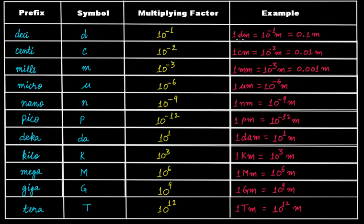For example, 1 decimeter is equal to 10 raised to the power of minus 1 meter — that's the multiplying factor for deci — so 1 decimeter equals 0.1 meter. Similarly, for centimeter, the multiplying factor is 10 to the power of minus 2, so 1 centimeter equals 0.01 meter. For millimeter, it's 10 to the power of minus 3 meter. 1 micrometer is 10 to the power of minus 6 meter. Similarly for nano, pico, deca, then for mega it's 10 to the power of 6 meter, and so on.